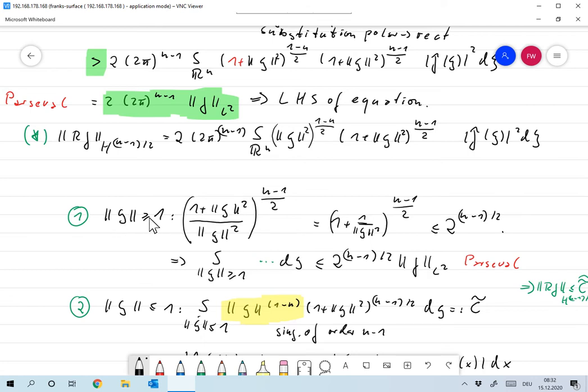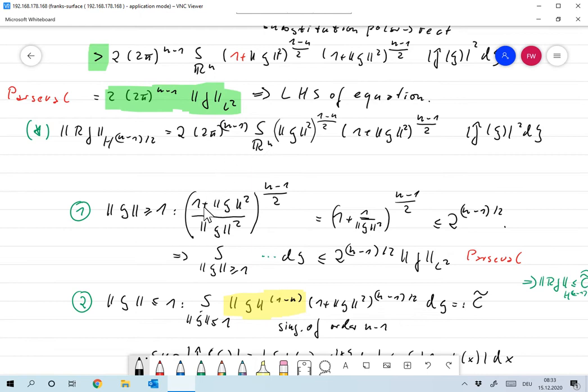If norm of psi is larger than 1, then I take these two together. Then this is the same as (1 + ||psi||^2) / ||psi||^2, which is nothing but 1 + 1/||psi||^2. Now if ||psi|| is larger than 1, then this over here is smaller than 2, so this is bounded by 2^((n-1)/2). So what I can do is from this integral, I can take the whole thing over here out and estimate it by 2^((n-1)/2). What's left is just the L2 norm of f hat. And again, using Parseval, this is the same as the L2 norm of f. So up to a constant, the integral where norm psi is smaller or equal to 1 is bounded by the L2 norm of f.